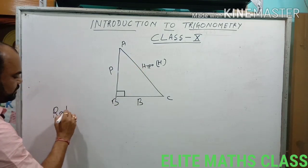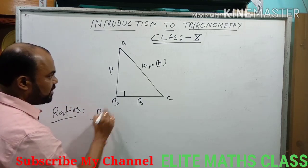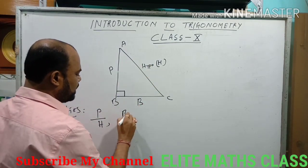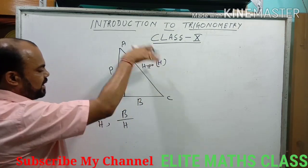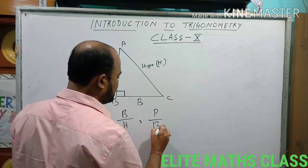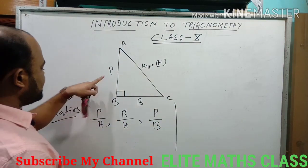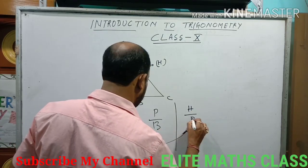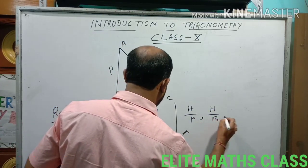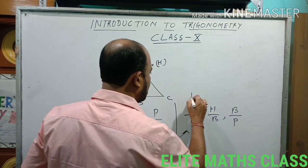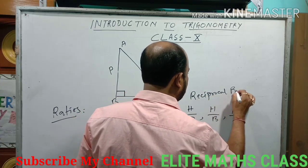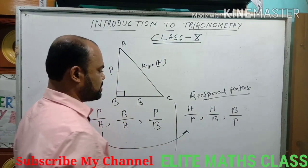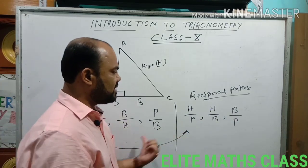Now see the ratios. First, you can take Perpendicular by Hypotenuse — that is the measure of this side to the measure of this side. Second ratio is Base by Hypotenuse, that is BC by AC. Third ratio is Perpendicular by Base. You can also take the reciprocal ratios: Hypotenuse by Perpendicular, Hypotenuse by Base, and Base by Perpendicular. These are reciprocal ratios. So ultimately we are getting 6 different ratios — the main 3 and 3 reciprocals.